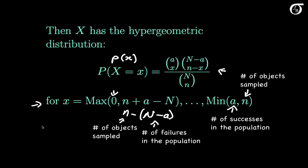The mean of a hypergeometric distribution is equal to n times a over N — in other words, n times the proportion of successes in the population. Note that this looks a lot like n times p, which is the mean of a binomial random variable, and it's essentially the same thing here. There's also a formula for the variance, but it's a little ugly and I'm going to leave it out. If you need it, you can easily look it up.